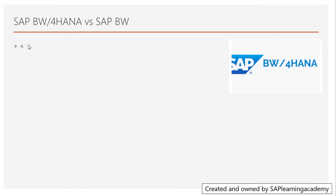Coming to the last slide of this tutorial, I'll discuss the main differences between BW4HANA and SAP BW. The biggest difference comes in terms of reporting. In the earlier version we used to see the Bex Analyzer, but now Bex Analyzer is no longer available.